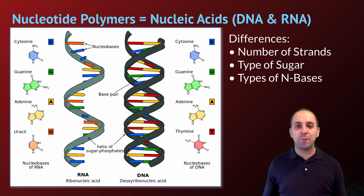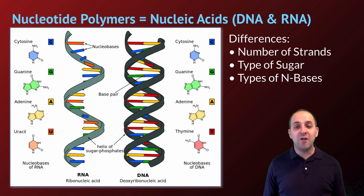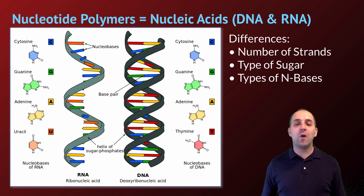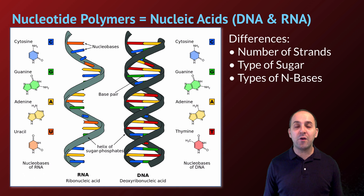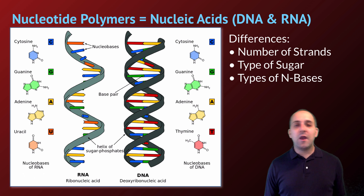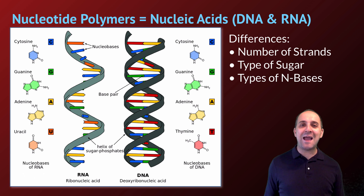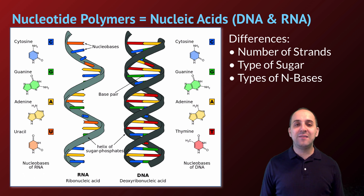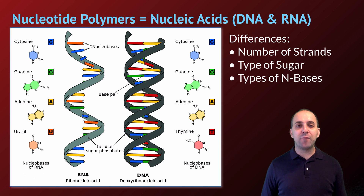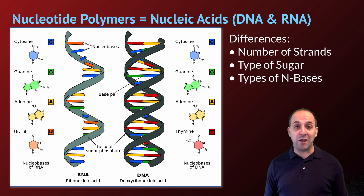As a brief comparison for our introductory purposes, there are some differences between DNA and RNA — specifically the number of strands. RNA has one strand of nucleotides, whereas DNA has two strands. The type of sugar is slightly different: RNA uses ribose and DNA uses deoxyribose. And the types of nitrogenous bases differ: in RNA there's cytosine, guanine, adenine, and uracil; in DNA there's cytosine, guanine, adenine, and thymine. We generally refer to these bases by one-letter shorthands: C, G, A, T, and U.